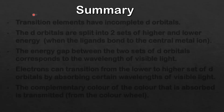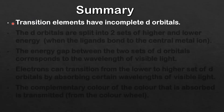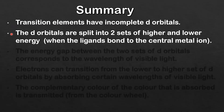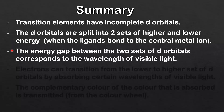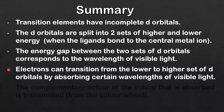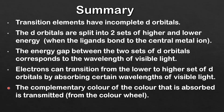So let's finish with a summary. Transition elements have incomplete d orbitals. The d orbitals are split into two sets of higher and lower energy when the ligands bond to the central metal ion. The energy gap between the two sets of d orbitals corresponds to the wavelength of visible light. Electrons can transition from the lower to the higher set of d orbitals by absorbing certain wavelengths of visible light. The complementary color of the color that is absorbed is transmitted, and you can determine that from the color wheel.